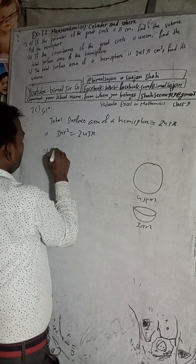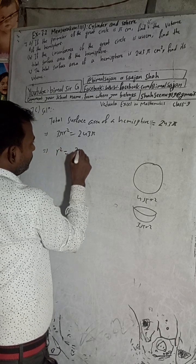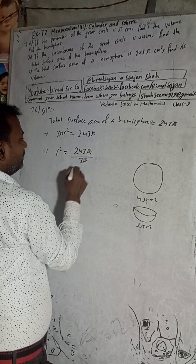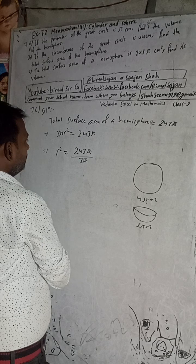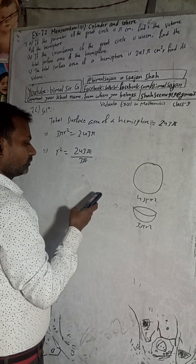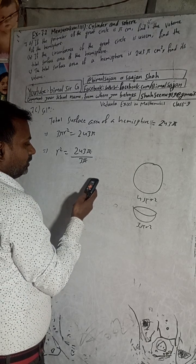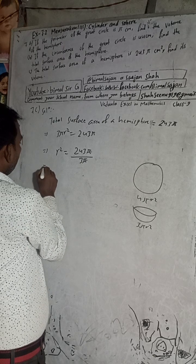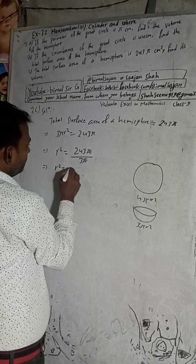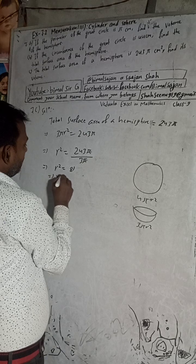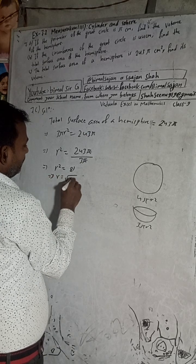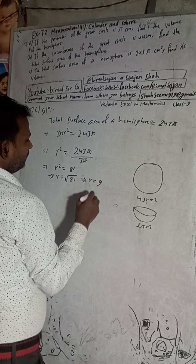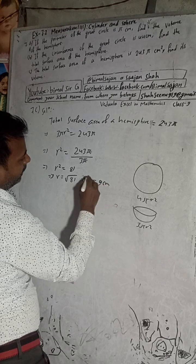So r squared is equal to 243π divided by 3π — the π cancels — giving r squared equal to 81. Therefore r is equal to the square root of 81, which implies r is equal to 9 cm.